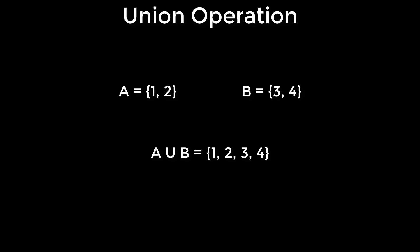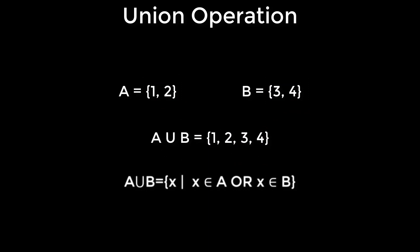That means the union operation unites the elements of different sets into one set. According to SetBuilder method, A union B is a set of X such that X belongs to A or X belongs to B. That means both elements of A and B are the elements of the set after doing union operation.